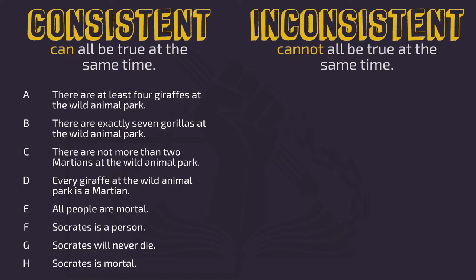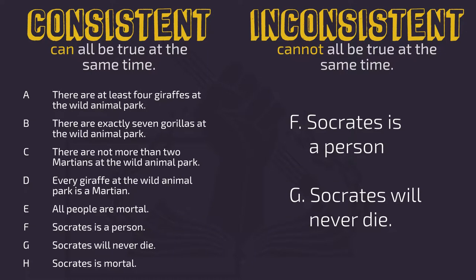The first question is: are the sentences below consistent or inconsistent statements? Statement F: Socrates is a person. Statement G: Socrates will never die. We can easily imagine a world where Socrates is both a person and can never die. Notice that in Statement F there's nothing about mortality — maybe some things are persons and some of those things do not die. Just going off the two statements themselves, there's nothing that precludes that possibility. So they are consistent statements.